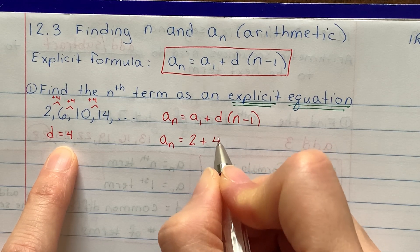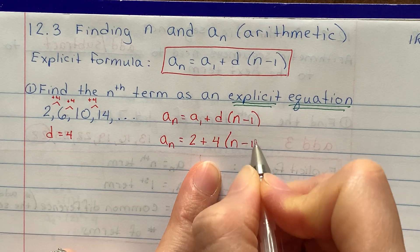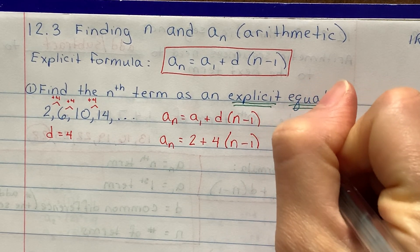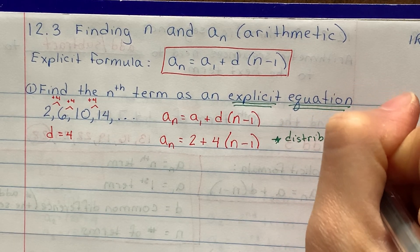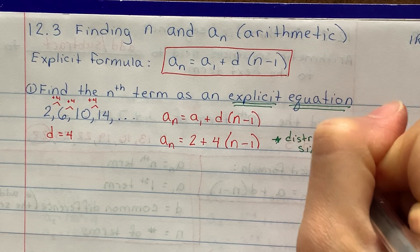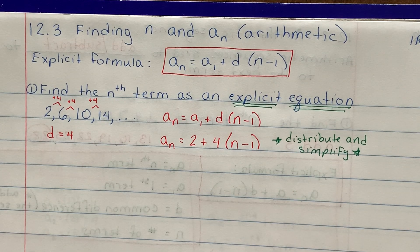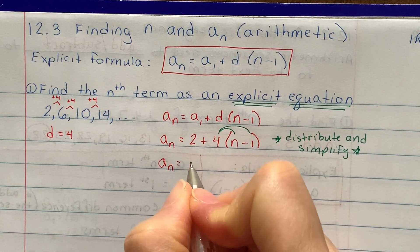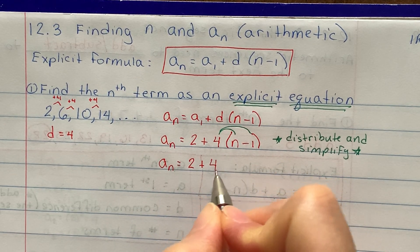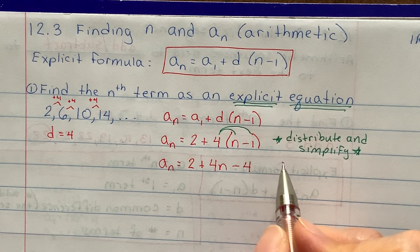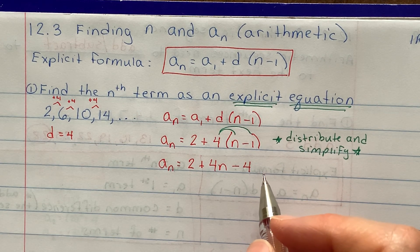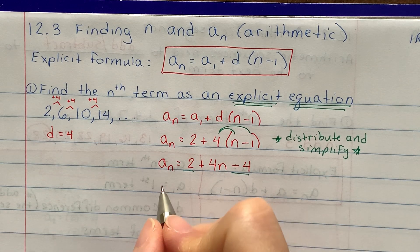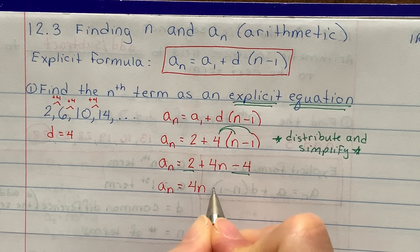d is the common difference, which in this question is 4. And they don't tell me what n is, so I'll leave it as n. When it says write the explicit equation, you need to distribute and simplify. If I see a number in front of a parenthesis, that's my signal to distribute. So I'm left with a sub n equals 2 plus 4n minus 4. Now I can simplify because there are like terms: 2 and negative 4. So my final answer is a sub n is equal to 4n minus 2.